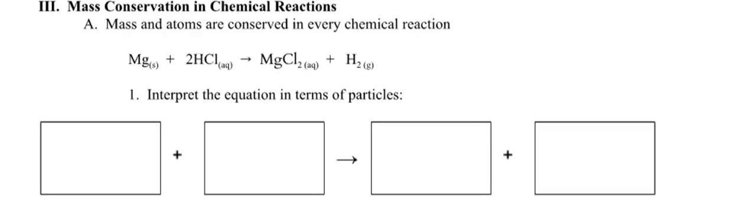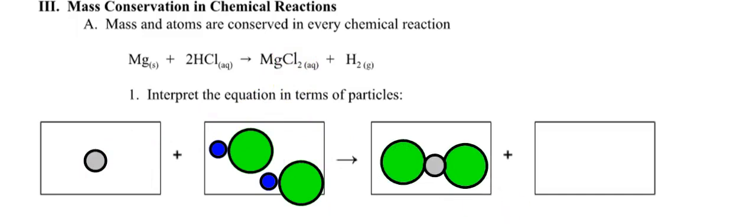So here we go. Mass conservation in a chemical reaction. Mass and atoms are conserved in every chemical reaction. So let's interpret the equation in terms of particles. I have one magnesium. I made that kind of like a silvery color because magnesium solid is that kind of a color. And then I have two HCls. Here's one and here's the other one. Hydrogen is the blue and chlorine is the green. And now I have one magnesium chloride. So I need one silvery one and two of the greens. And then I have an H2. So are the particles, are the atoms conserved? Yes. I have one and one, two blues, two blues, two greens, two greens.